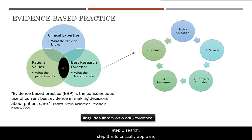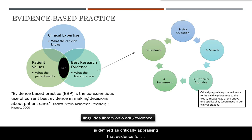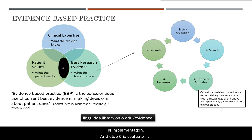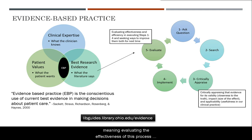Step one: ask a question. Step two: search. Step three is to critically appraise — which is what we'll be focusing on in this video — defined as critically appraising evidence for its validity (the closeness to the truth), its impact (size of the effect), and applicability (the usefulness in clinical practice or to your question). Step four is implementation, and step five is evaluate, meaning evaluating the effectiveness of this process and your implementation.